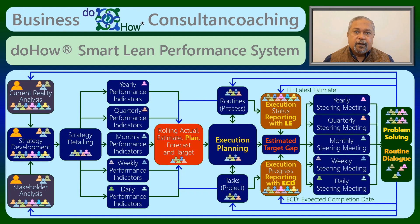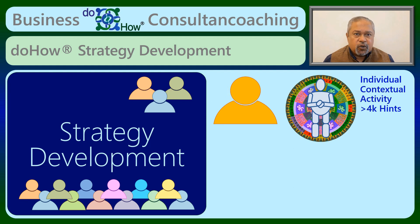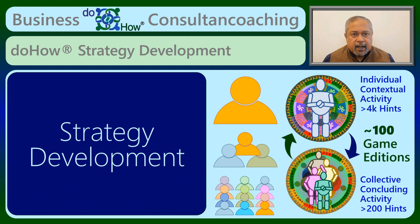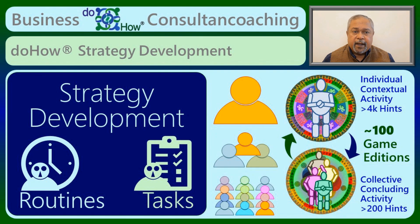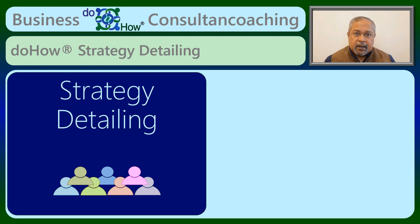Strategy development with DoHow games is an inclusive large-scale interactive process with every participant getting to perform an individual task with a contextual hint, followed by a collective task for teams of 2-4, both alternating every 10-15 minutes. Once the teams have identified sufficient potential strategies, the teams debate and discuss the stakeholders between themselves for deciding on the final strategies in consensus while adding routines and tasks for the next steps before executing the strategies. Strategy detailing starts by identifying a change, approach or practice for addressing the expectations from stakeholder analysis, challenges from current reality analysis and the strategies developed.